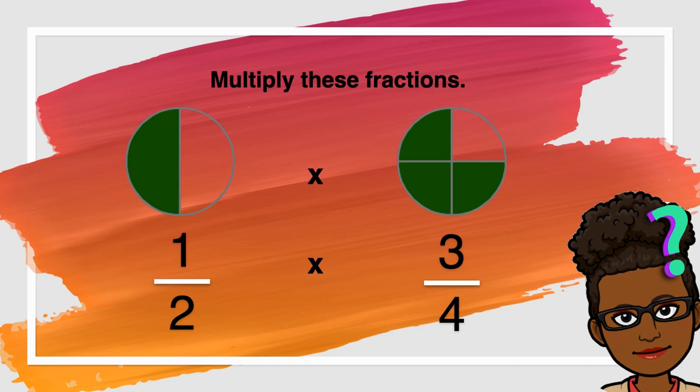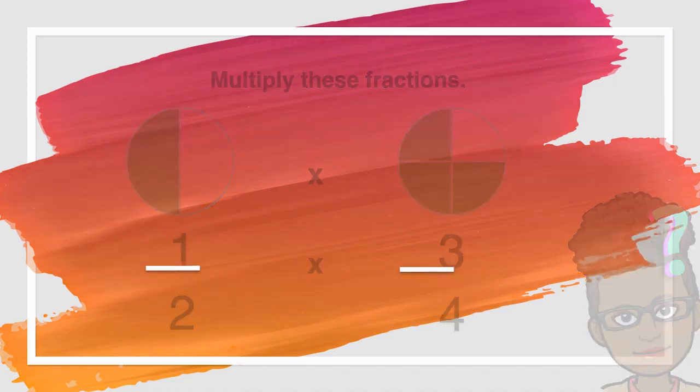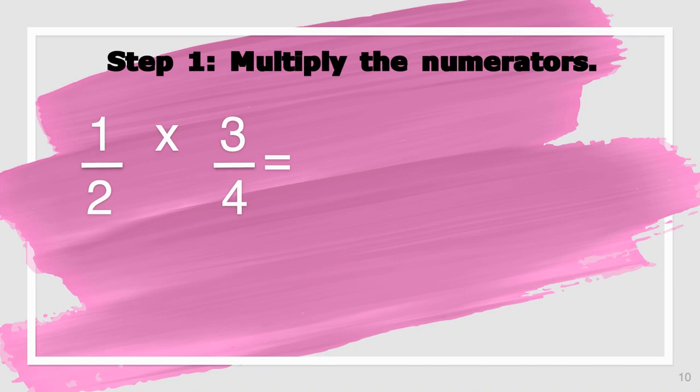Three-fourths. Now, we can begin multiplying these fractions. Remember, there are three easy steps for us. Our first step says to multiply the numerators. And when we do that, one times three is equal to three.